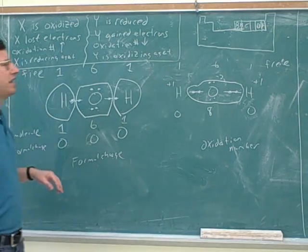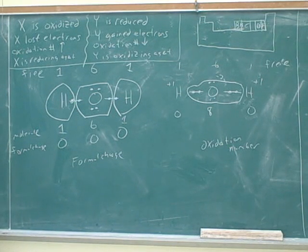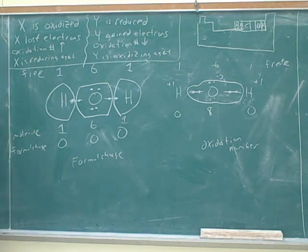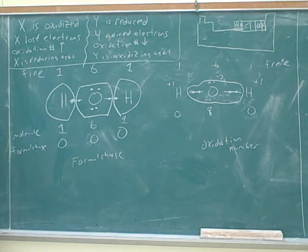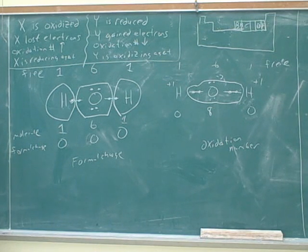He talked about oxidation states for the D-block, but now you're moving into a whole different chapter on redox reactions and electrochemistry. In that chapter, it's not going to mainly be about transition metals — it's going to be about galvanic cells and electrochemical cells, which doesn't actually have much to do with transition metals. So now he's mainly focusing on oxidation numbers for the main group elements.